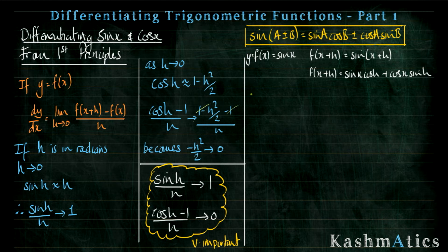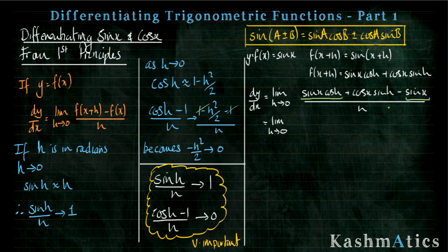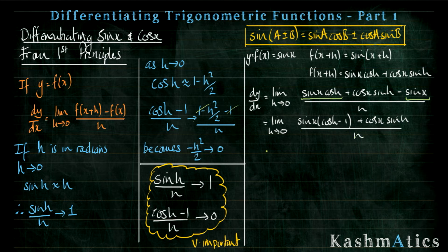So let's put everything together. We've got y equals f of x, so dy by dx equals the limit as h approaches zero of f of x plus h — which is sine x cos h plus cos x sine h — take away f of x, which is sine x, all over h. Next I'm going to rearrange slightly: I'll group the sine x terms together and factorize out sine x, and write the other term separately, giving sine x times (cos h minus 1) plus cos x sine h, all divided by h.